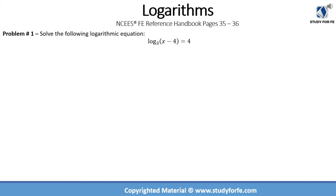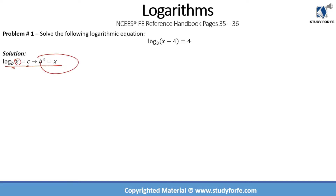I recommend that you go ahead and solve each and every one of these problems on your own and then see how I go about solving them. In problem number one, we are being asked to solve the logarithmic equation for the unknown variable x. In order to solve this, we are going to use this law of logarithm: when we have log base b of x equal to a constant c, we can convert this into exponential form — b raised to the power of c equals x.